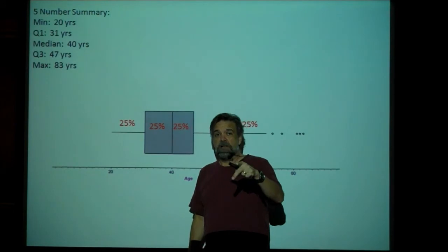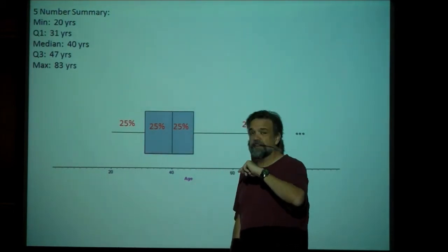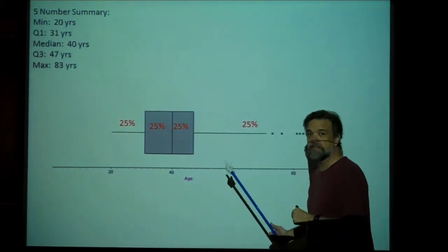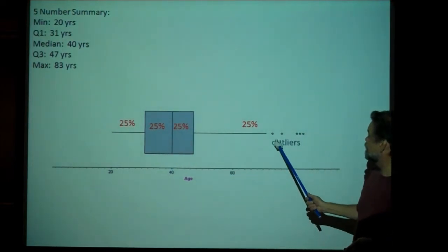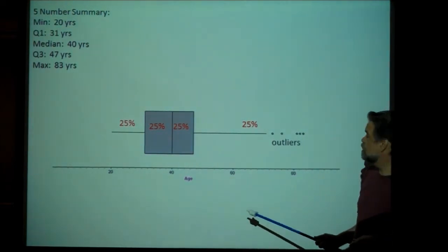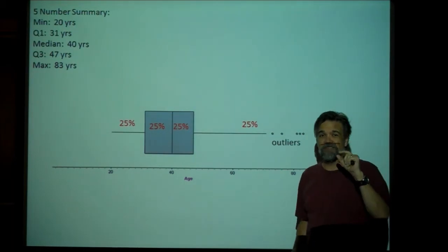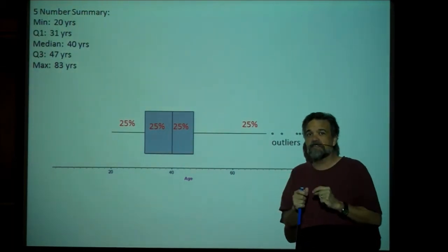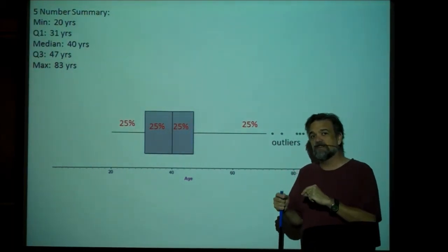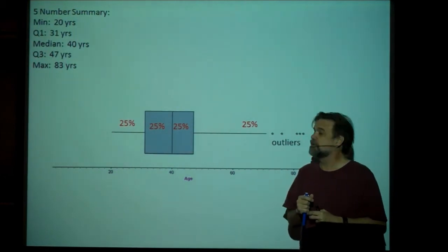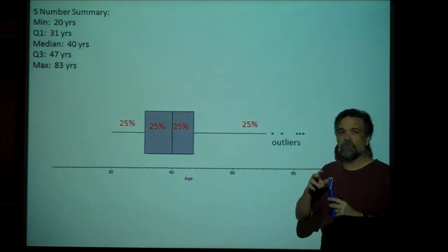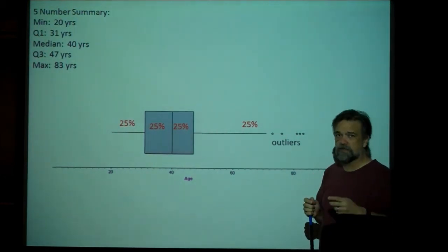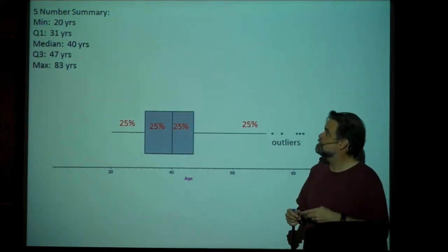Now, the box plots that we're going to be looking at are a little bit different from this because the box plots we're looking at also have outliers. We're specifically going to come up with a specific guideline on what to consider an outlier and what to not consider an outlier. But before we do that, I want to talk about something else.